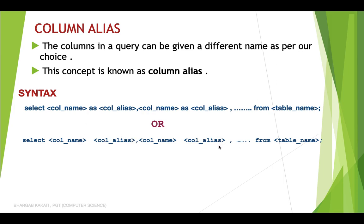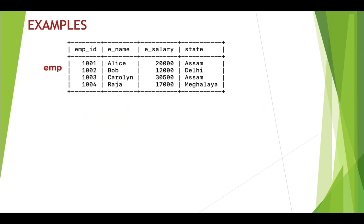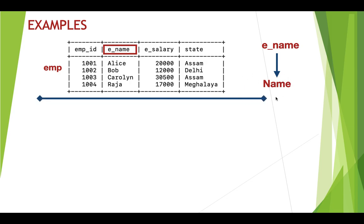So we have learned two ways in which column alias can be done: first using the AS keyword, second using a space. Now let's understand this with an example. We'll take the emp relation. Here I want to rename 'ename' — the original name — to a new name which is 'name'. So instead of ename I just want to display it as name.